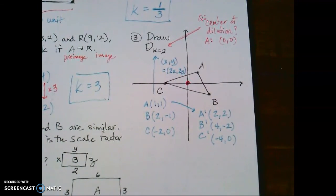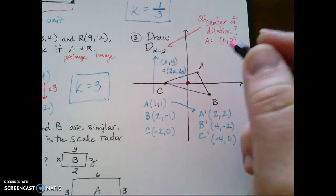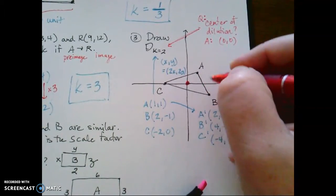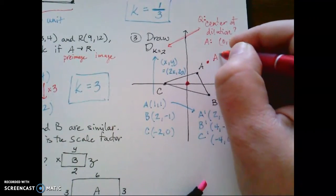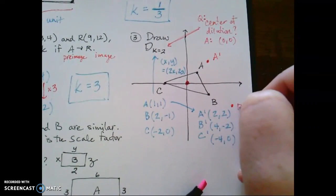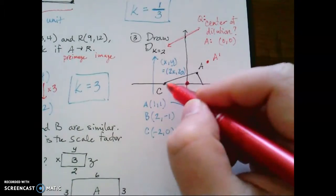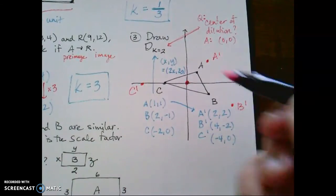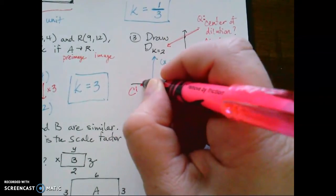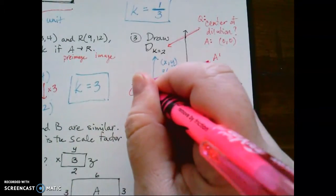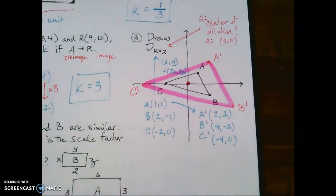Now because I've just drawn all over the place, I'm going to use a highlighter to plot these points next, or to draw the figure. So A prime is at 2-2, B prime is at 1-2-3-4-2, and C prime is at negative 4-0. And so this figure, if I don't mess it up, this figure here is the enlargement of triangle ABC.